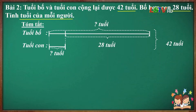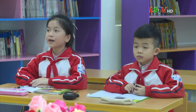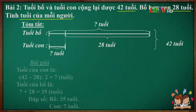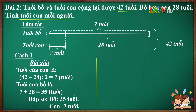Các em vận dụng công thức, lựa chọn 1 trong 2 cách giải để làm bài tập trong thời gian 3 phút. Thưa cô, bài giải: tuổi của con là (42 trừ 28) chia 2 bằng 7 tuổi. Tuổi của bố là 7 cộng 28 bằng 35 tuổi. Đáp số: tuổi bố 35 tuổi, con 7 tuổi. Bài làm của em rất tốt. Cô khen em. Bạn đã lựa chọn cách giải thứ nhất là tìm tuổi của con trước, tức là tìm số bé trước.